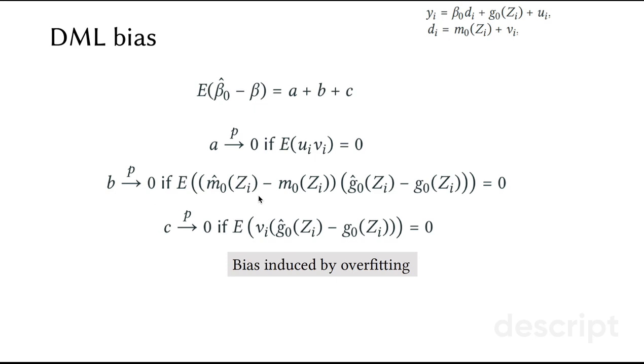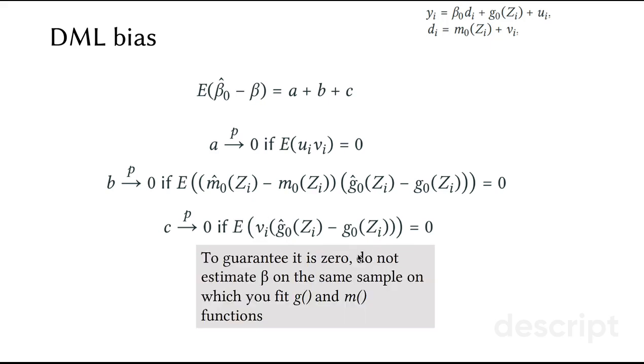The third component of the bias includes this term, and it will not disappear if this term is not equal to zero. This part is called bias induced by overfitting or overfitting bias. In order to guarantee that this term is zero, we cannot estimate beta coefficient on the same sample on which you feed the functional forms for g and m.